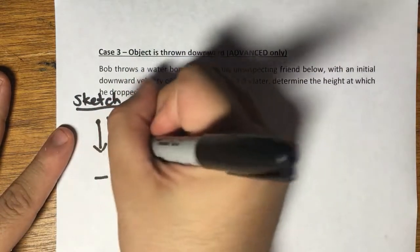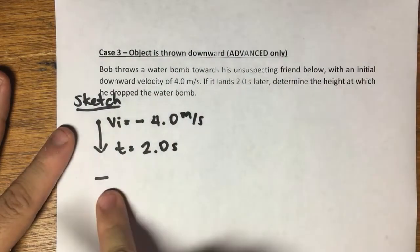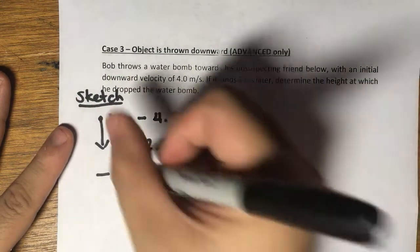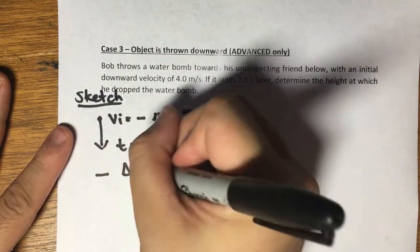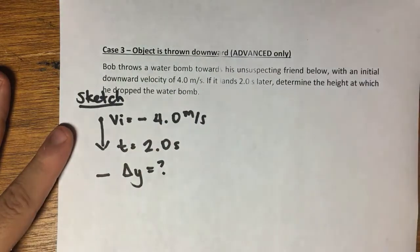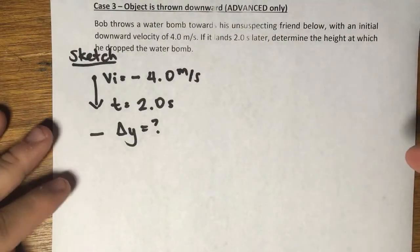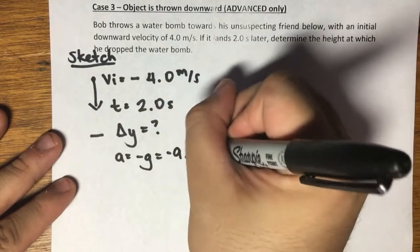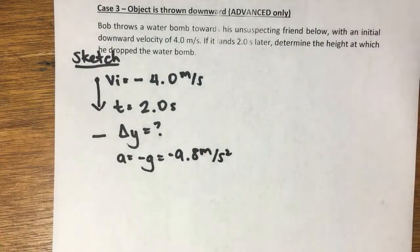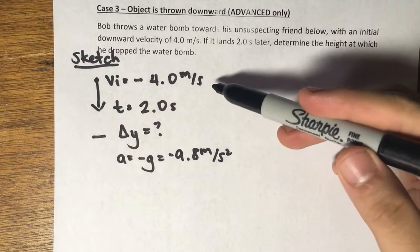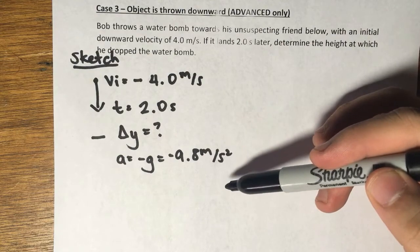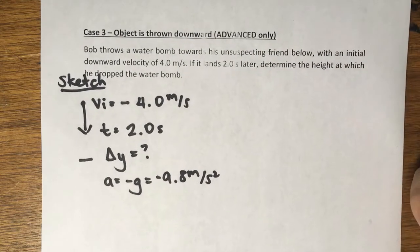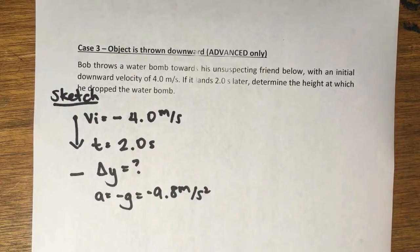We know that it takes a time of 2.0 seconds for it to reach the ground, and we are looking for the height — so the height is delta y. The only assumption we can make here is that acceleration is equal to negative g, which is negative 9.8. If an object is thrown downward, you know that gravity will always act on it. It already has a negative initial velocity and a negative acceleration, so it will go really, really fast. So this is our given and required.